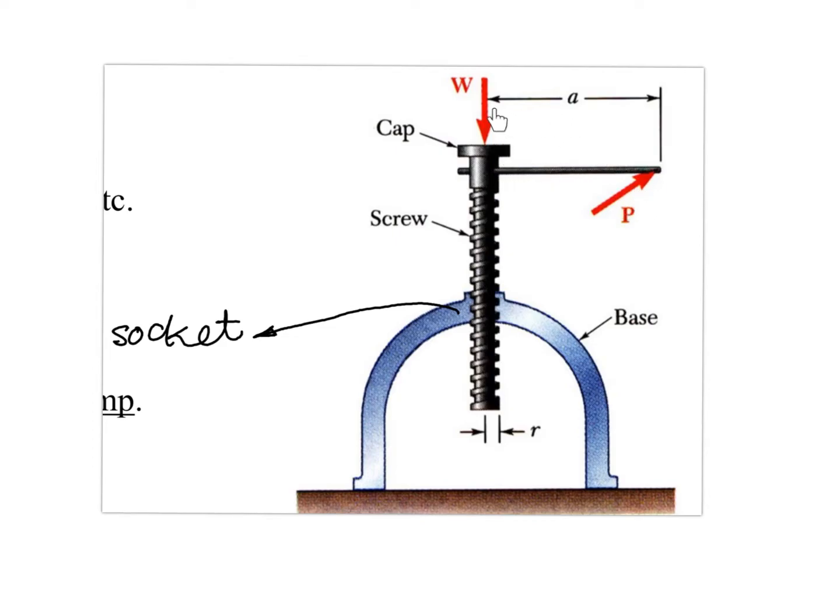Say now I'm applying a force capital P which is at a distance of little a, so the moment created about this axis will be P times little a. In response to that there will be a tangential force generated at this socket screw interface. This is the socket and this is the screw. There will be a force generated at the socket screw interface, let's call that capital Q. Since the radius of the screw is little r, that will exert a moment about this particular axis, about the center axis of the screw, which is equal to Q times r.